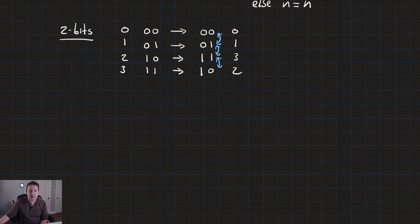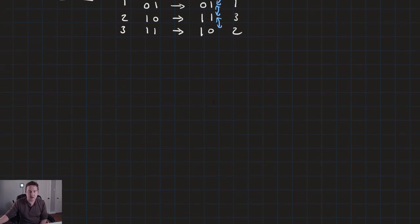If you're paying attention, you can probably guess that this relates to the uniting theorem, because the uniting theorem combines terms that have one bit of difference. Gray code lets us stack the terms in a neat, organized way so that all adjacent terms differ by one bit and can be combined using the uniting theorem. Let's take a look at the 3-bit example.